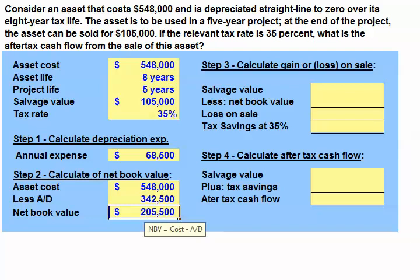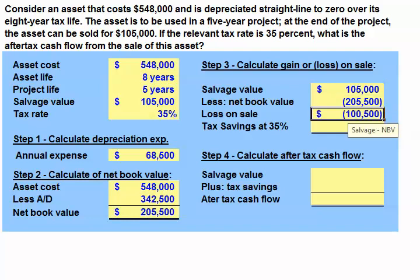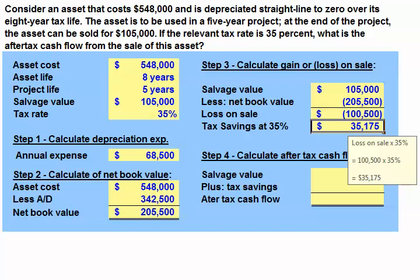The third step is to calculate any gain or loss on the sale of our asset at the end of the project. In this case, we're going to have a taxable loss. We take our salvage value, which was given as $105,000, and we subtract the net book value of the asset, which was $205,500, which we just calculated in step two. This gives us a loss on the sale of $100,500. This tax loss we can use to offset income in other parts of our business, so it will result in a tax savings of $35,175.